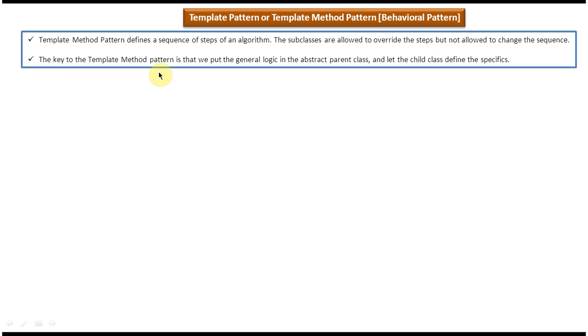This is the second explanation: the key to the template method design pattern is that we put the generic logic in the abstract parent class and let the child class define the specifics.